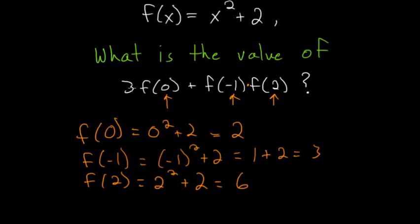So now, to answer the original question, we have 3 times this f of 0, or 2, plus f of minus 1, which we know is 3, times f of 2, which we know is 6.